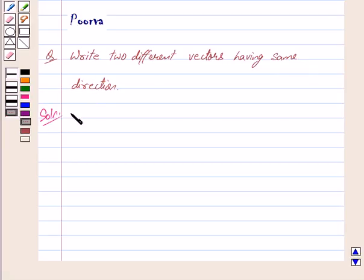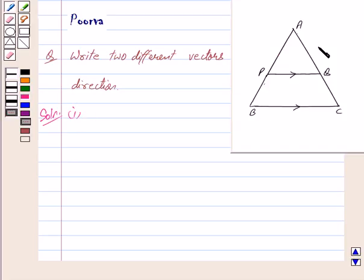We will take two examples. In the first example, consider a triangle ABC. Now in triangle ABC, we can clearly see that vector PQ and vector BC have same direction, but they are different in magnitude.